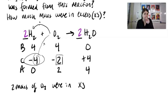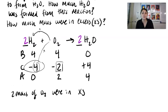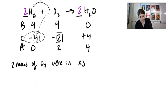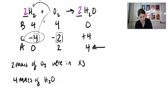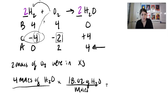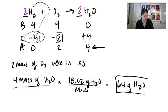So 2 moles of O₂ were in excess. For the H₂O product — it's a 2-to-2 ratio with H₂, so since H₂ change was 4, we get positive 4 moles of H₂O formed. To find the grams: 4 moles of H₂O multiplied by 18.02 g/mol gives approximately 72.08 grams of H₂O.